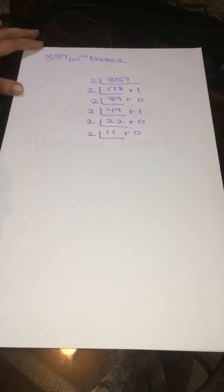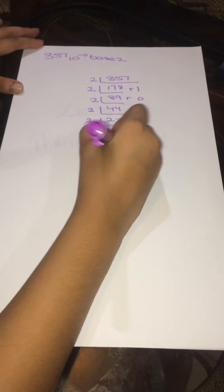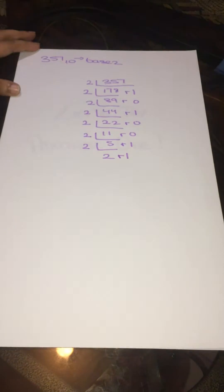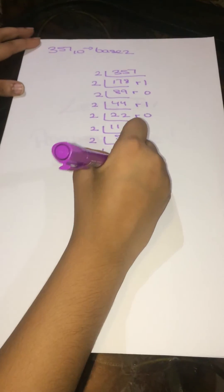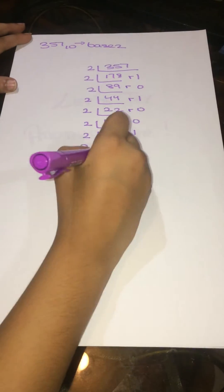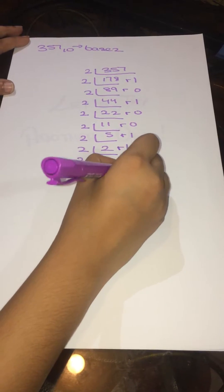And 11 divided by 2 will give you 5 remainder 1. And 5 divided by 2 will give you 2 remainder 1. And 2 divided by 2 will give you 1 remainder 0. And 1 divided by 2 will give you 0 remainder 1.